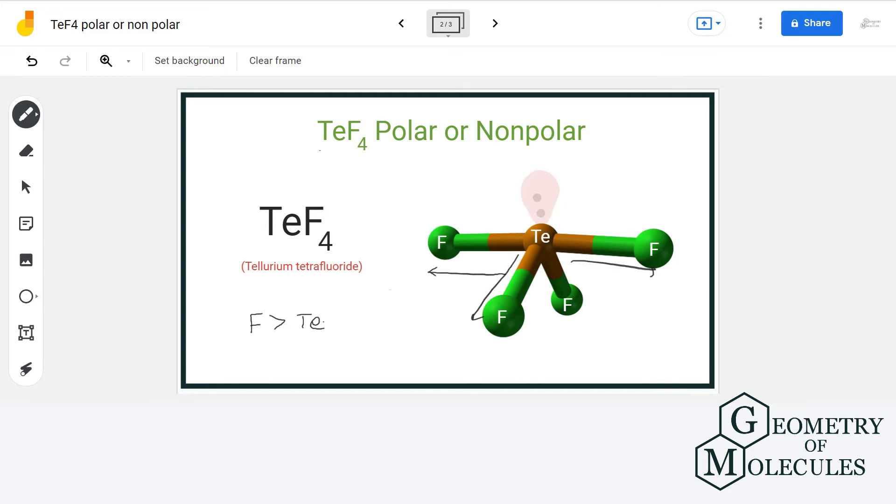There will be a formation of dipole moment which will be towards the fluorine atoms. Each fluorine atom will form a partial negative charge on it, and the tellurium atom will have a partial positive charge on it.